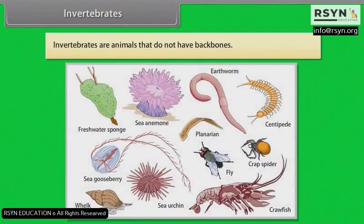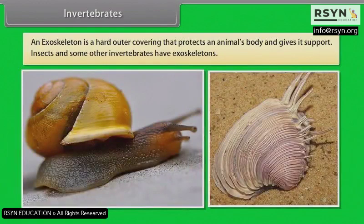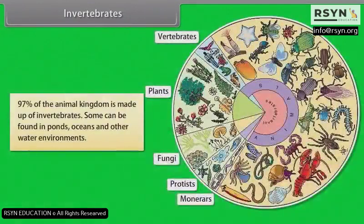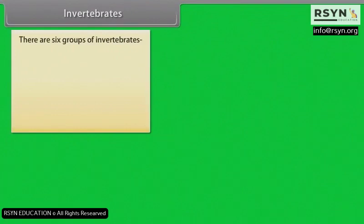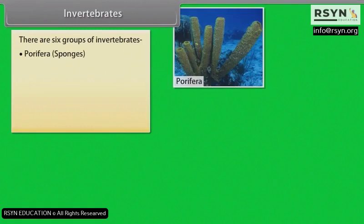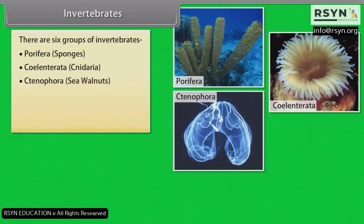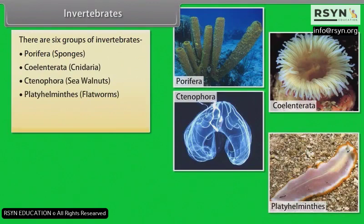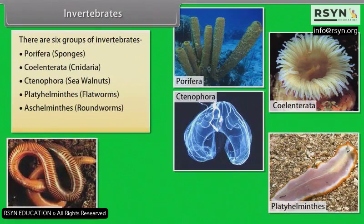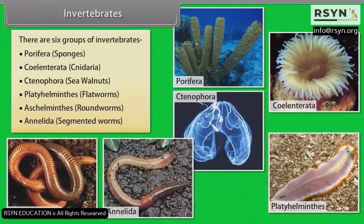Invertebrates are animals that do not have backbones. An exoskeleton is a hard outer covering that protects an animal's body and gives it support. Insects and some other invertebrates have exoskeletons. Ninety-seven percent of the animal kingdom is made up of invertebrates. Some can be found in ponds, oceans and other water environments. There are six groups of invertebrates: porifera (example: sponges), coelenterata (example: cnidaria), ctenophora (sea walnuts), platyhelminthes (example: flatworms), aschelminthes (example: roundworms), and annelida (example: segmented worms).